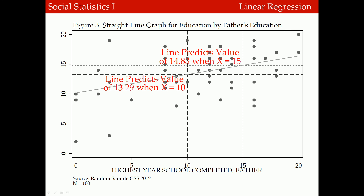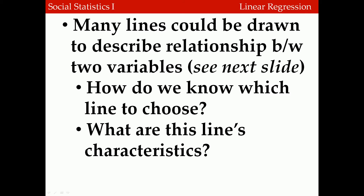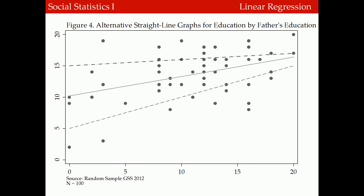For a father's education of 15 years, the line predicts 14.83 years of education for the respondent. However, we could use any number of lines to describe the relationship. So how do we know which line to choose, and what are the characteristics of these lines?